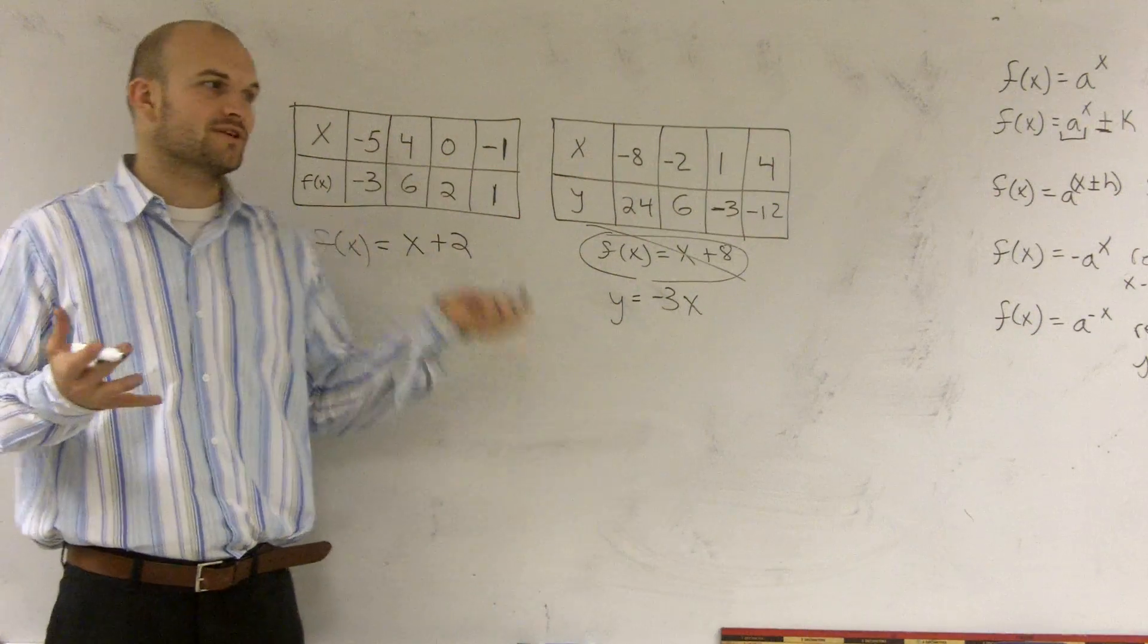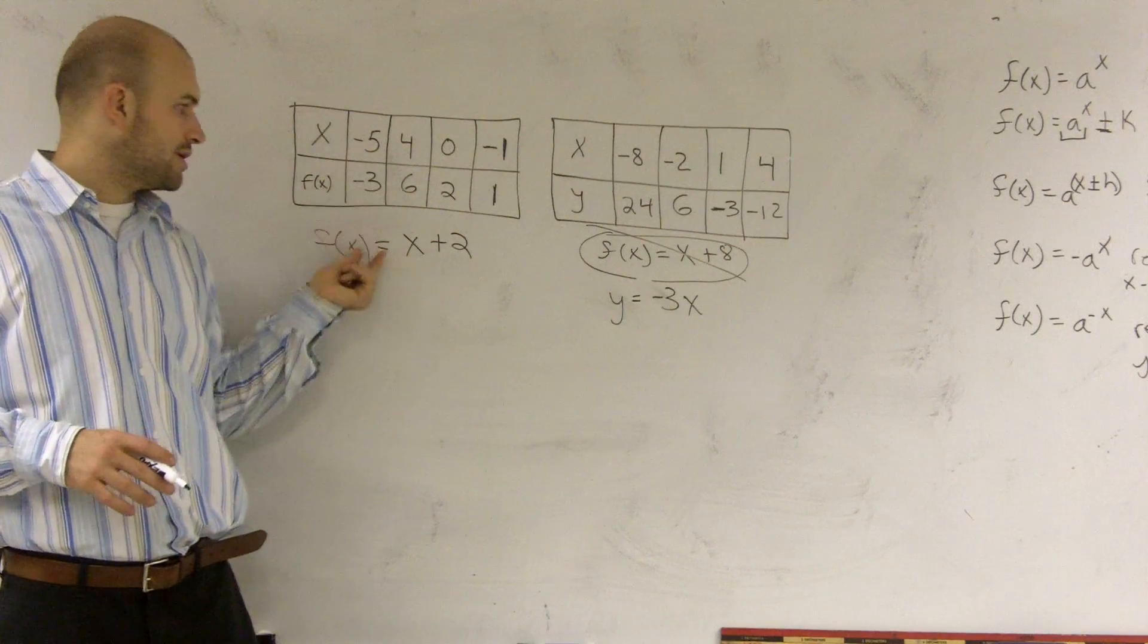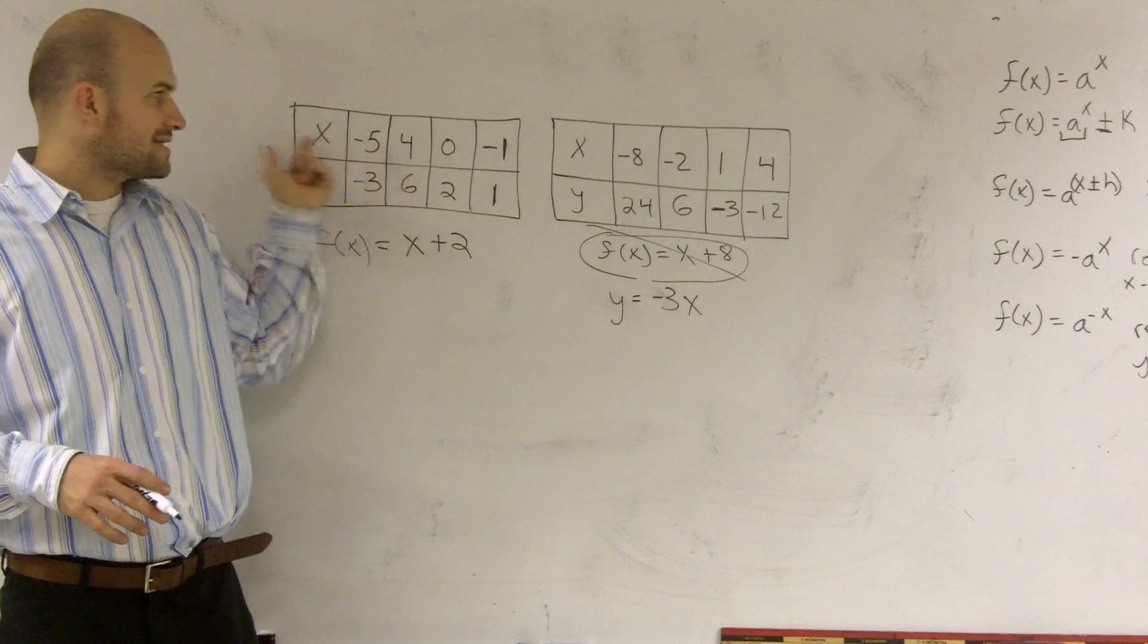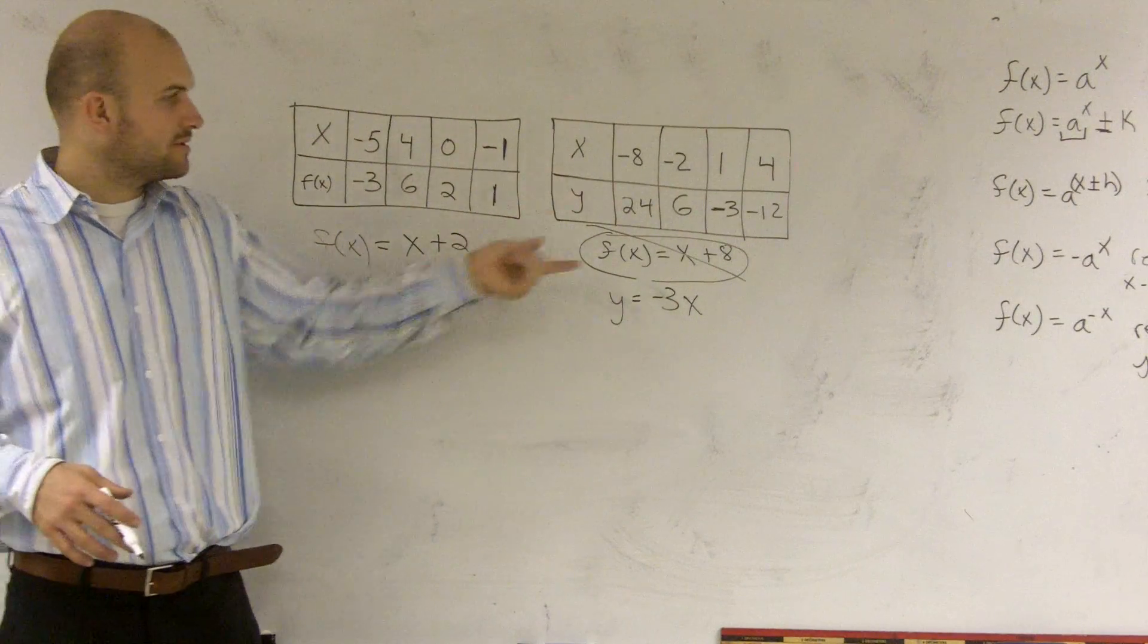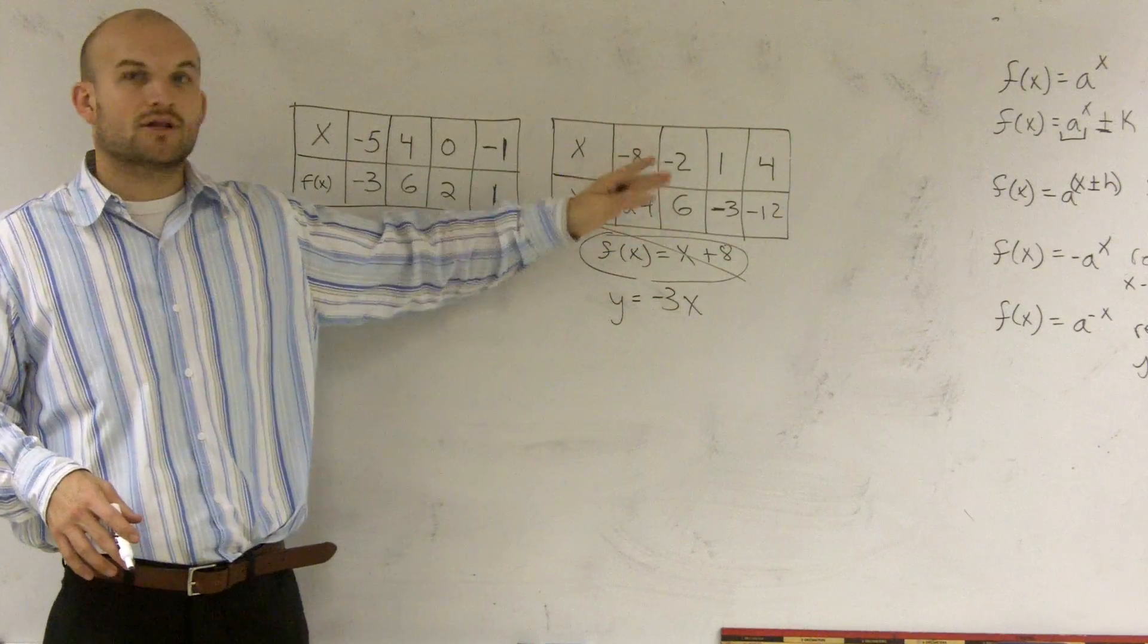So the first thing, the easy way to do is always look for addition and subtraction. If you find it, write it as, you know, your output, which in this case is f of x, equals x for any number, plus whatever or minus whatever you figured out. And then, if you can't find addition or subtraction, look for a multiplication or division.